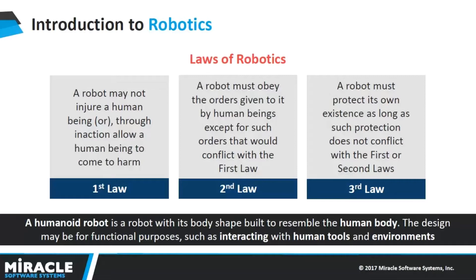Humanoid robots replicate walking, lifting, speech, cognition, and basically anything a human can do. Robotics is used in STEM — science, technology, engineering, and mathematics — as a technical aid.